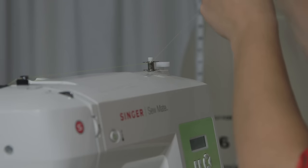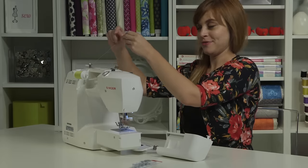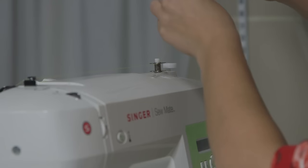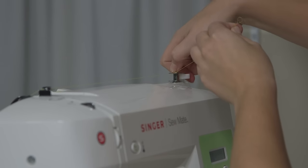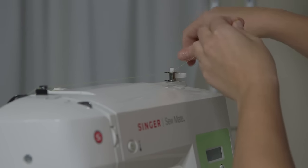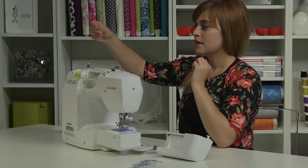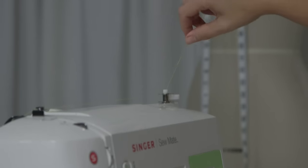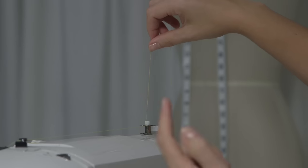If you don't, you might accidentally wind thread under the bobbin, and we don't want to do that. To tell the machine we're going to wind a bobbin, we're going to push this over to the right, so it pops all the way over to the right. Now we're going to hold our tail up and out of the way, push on the pedal, and the bobbin will start winding.